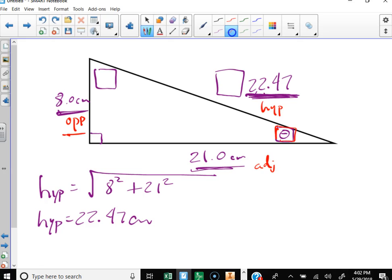And I want to use this side and this side. So I want to use opposite and adjacent. So I ask myself, what trig function out of the SOHCAHTOA involves opposite and adjacent? Tangent, correct.